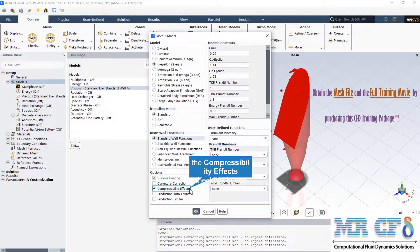We have enabled the compressibility effect that can improve the prediction of free shear layers at high Mach numbers. This is available when the compressible form of the ideal gas law or the ideal gas model is activated for K-Epsilon, K-Omega and some other turbulence models.